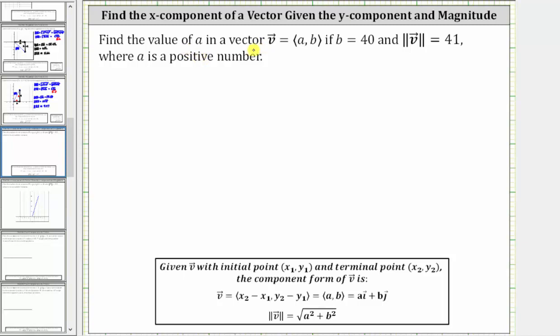We're asked to find the value of a in a vector v, where the x component is a and the y component is b, if b equals 40 and the magnitude of vector v is 41.